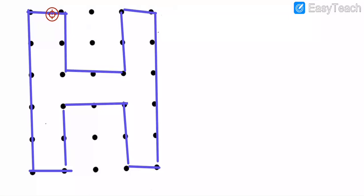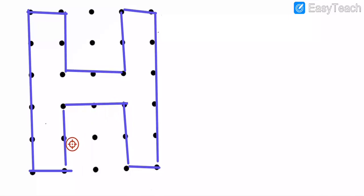Counting the H shape: 1, 2, 3, 4, 5, 6, 7, 8, 9, 10, 11, 12, 13, 14, 15, 16, 17, 18, 19, 20, 21, 22, 23, 24, 25, 26. So the H shape has a perimeter of 26 units. Note this down compulsory in your book.